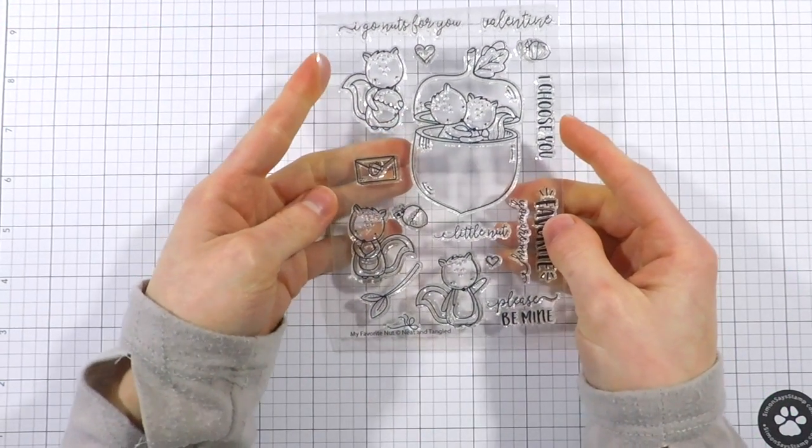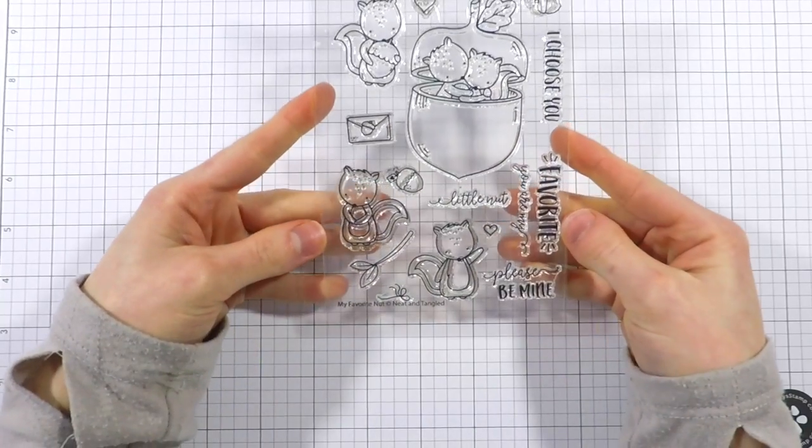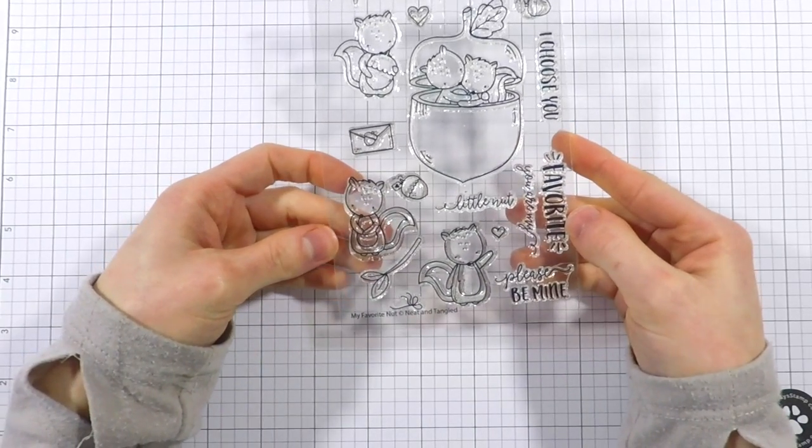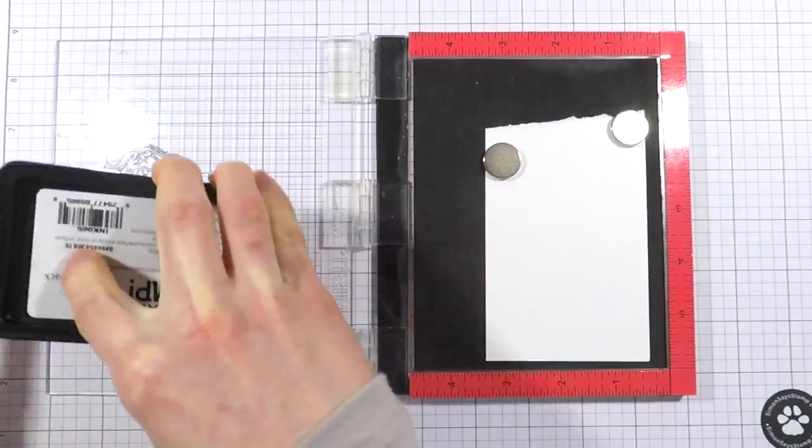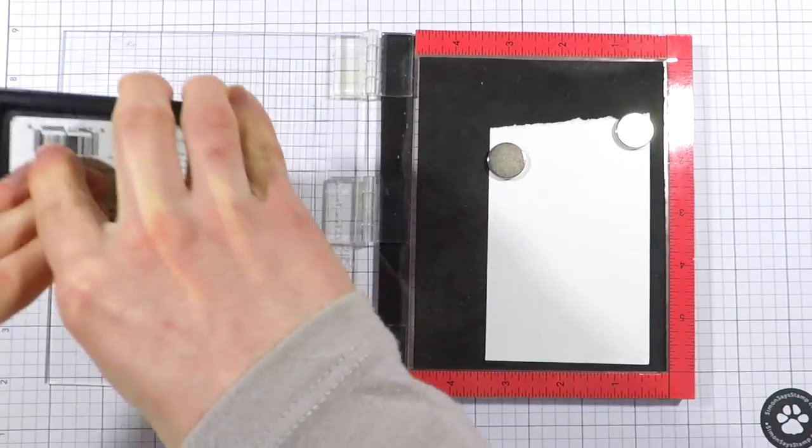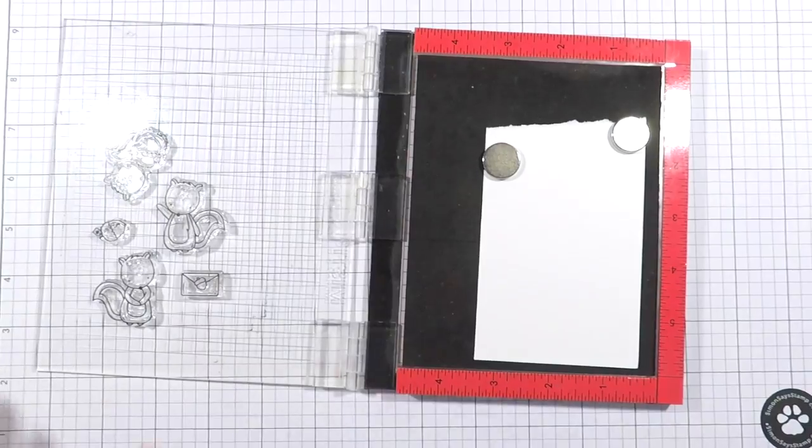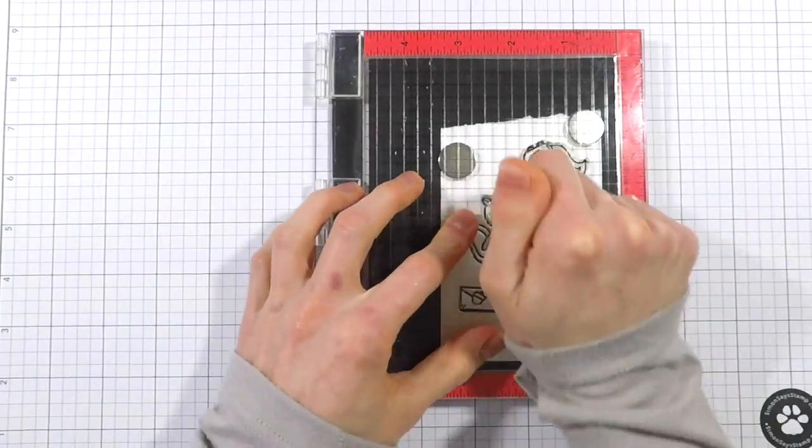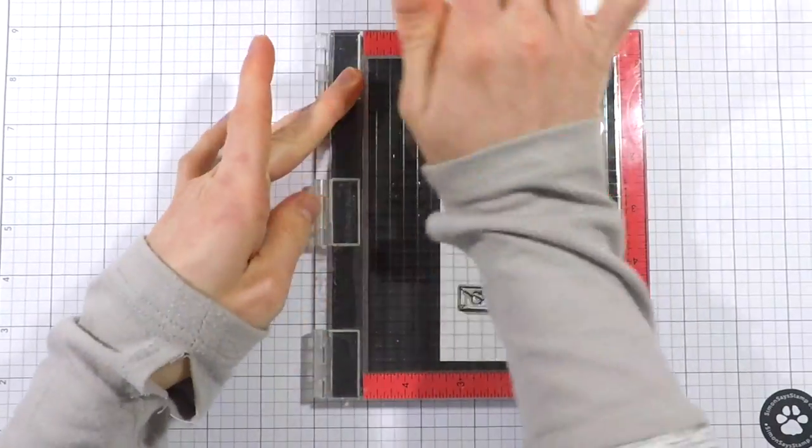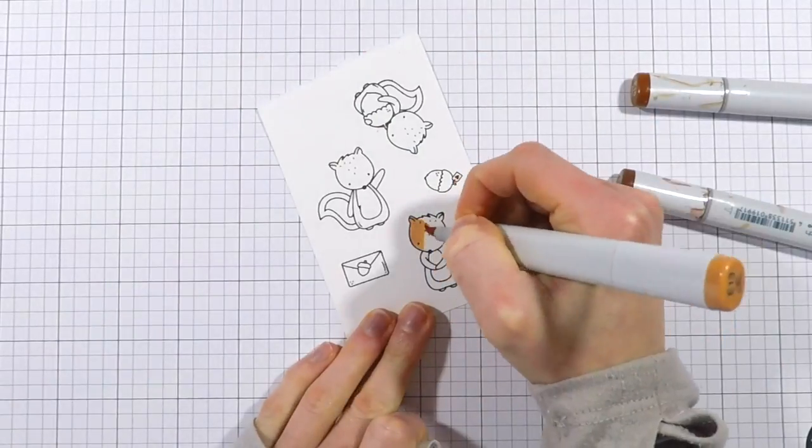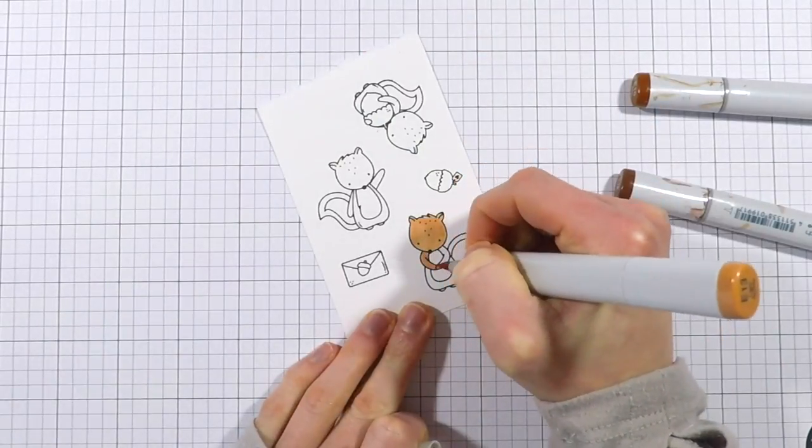I'm first bringing out the My Favorite Nut stamp set from Neat and Tangled. This was one of their most recent releases and I think it is so adorable. It's perfect for love themed or Valentine's Day cards. I'm inking it up in my Misti stamping tool with a little bit of Simon Says Stamp intense black dye ink, pressing this down onto some Neenah solar white cardstock.